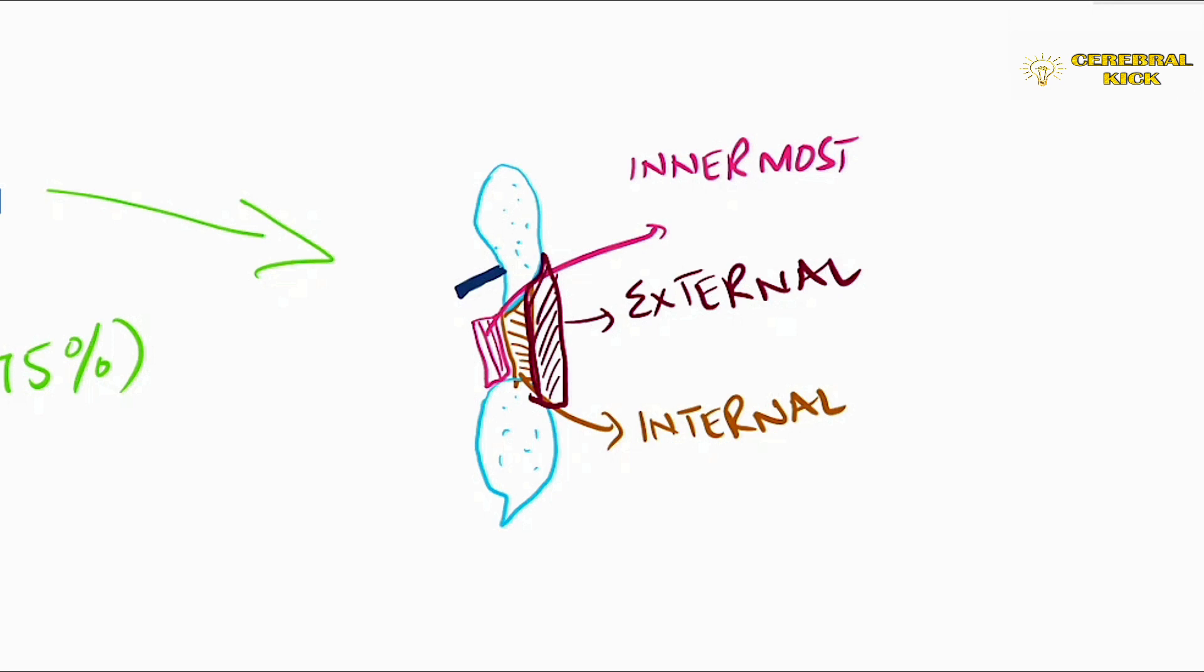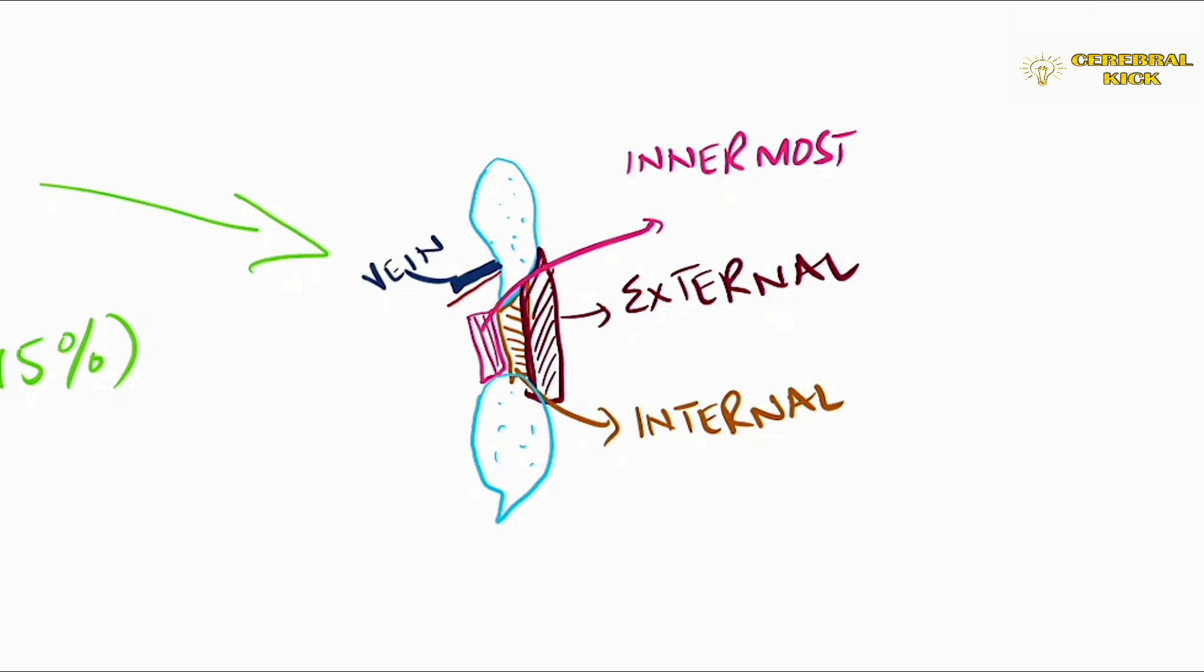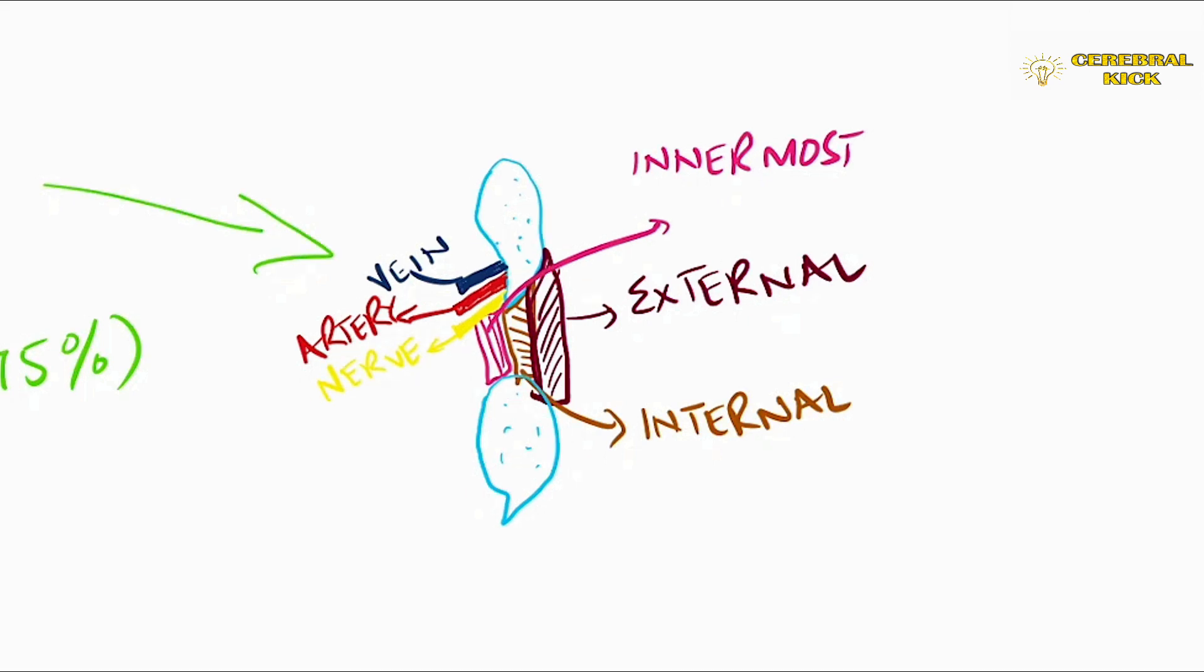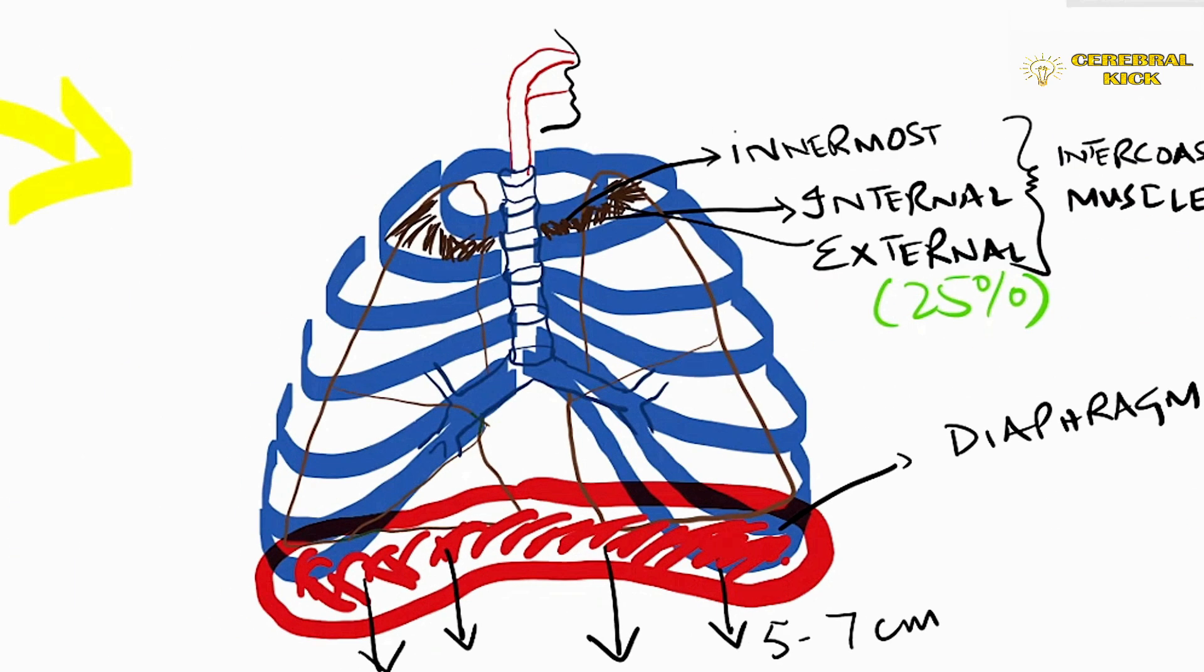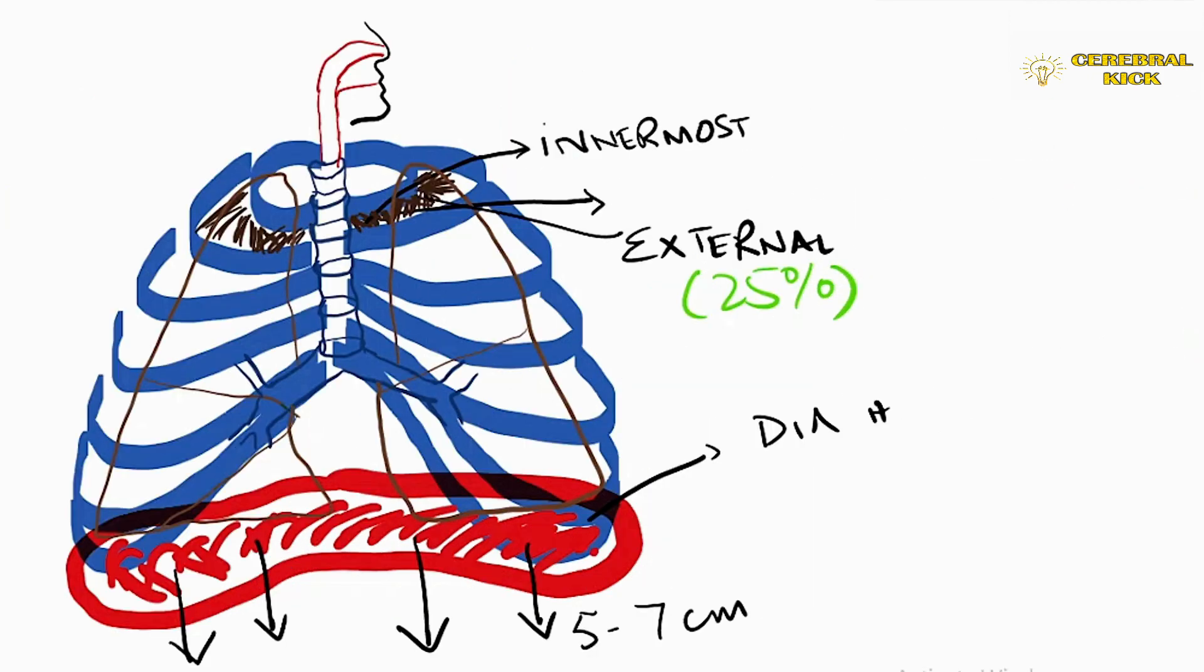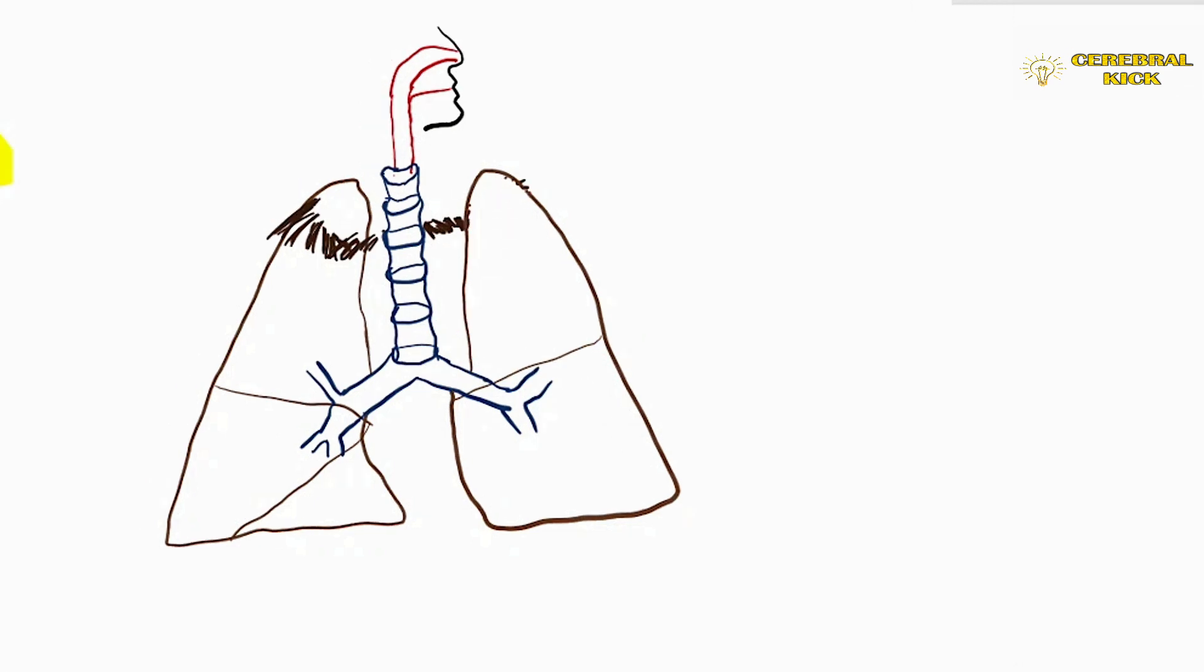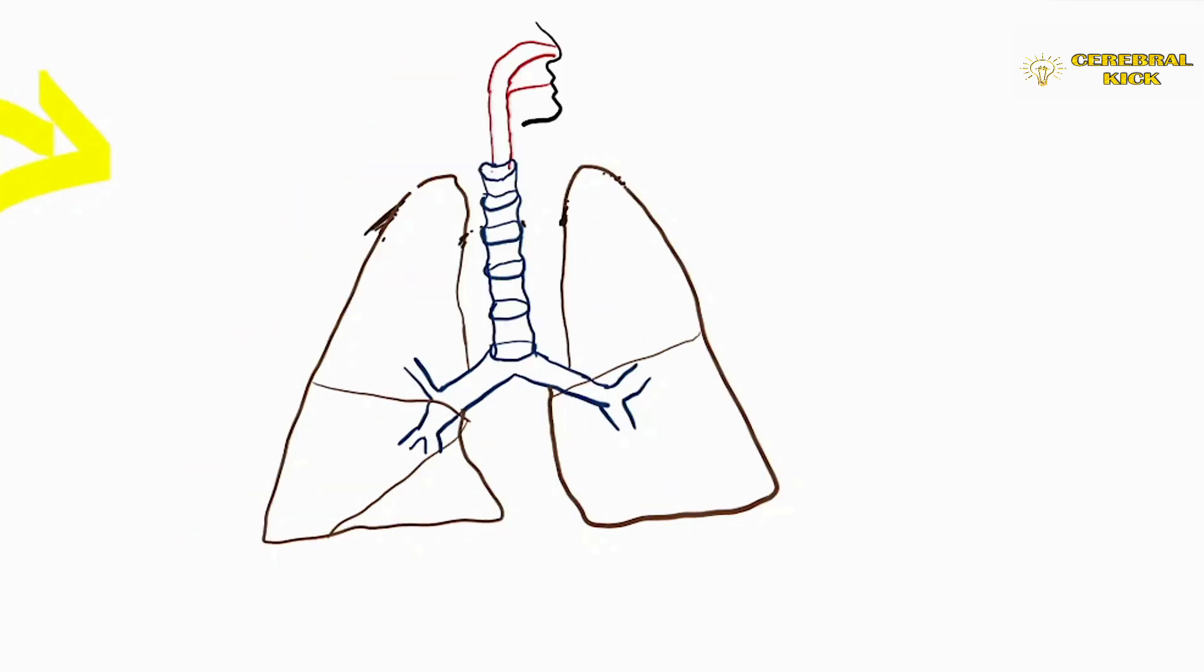The vein, artery and nerve in a fixed formation of VAN are placed in the groove. This is important from academic point of view. You can learn it through the mnemonic VAN: vein, artery, nerve from inside to outside or medial to lateral. The chest area is most painful because it is rich in nerves. Let's remove the musculoskeletal system now and go into the lungs.